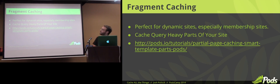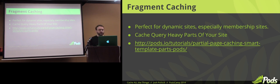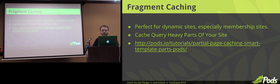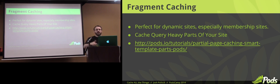Fragment caching — I touched on earlier. This is more of a front-end trick. These are perfect for your dynamic sites, especially membership sites. Your static HTML caching system is great for your blog; it's not great for your membership site. This allows us to cache very heavy parts of the site. There are certain parts of your site that run a ton of queries — your sidebar — and there are other parts that are just basically get this post, get these fields. These are pretty efficient things.